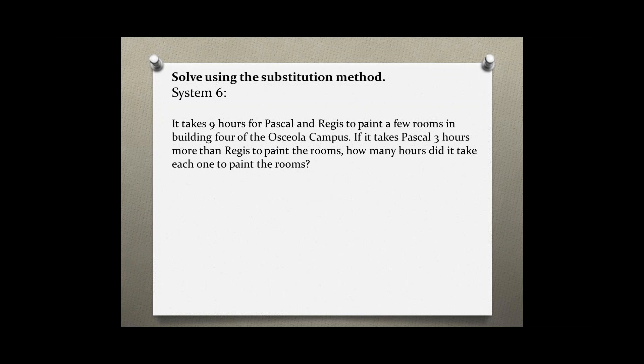We can use a system of linear equations to solve this word problem. As you notice, you have two different people, so I'm going to use the variables P for Pascal and R for Regis rather than X and Y. So once I get my solution, I know which variable stands for which person.